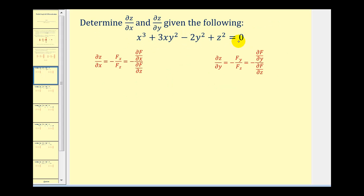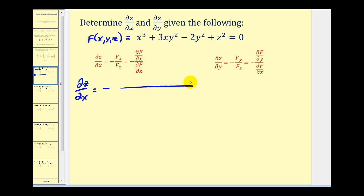Notice this equation is already in the correct form, so we can let f(x, y, z) equal the given equation. Let's determine the partial of z with respect to x. We start with the denominator, which is the partial of f with respect to z, treating x and y as constants. The first terms give zero, and this term gives 2z.